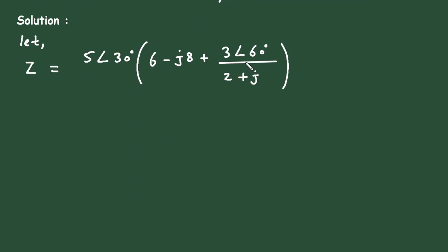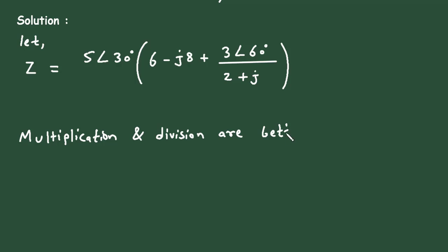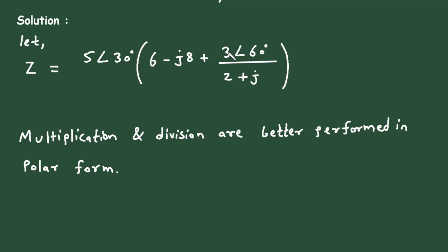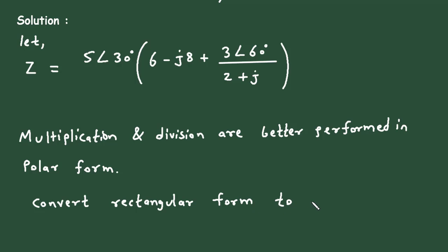First we will simplify the bracket. We have to perform division, and we know that multiplication and division are better performed in polar form. The numerator is already in polar form but the denominator is in rectangular form, so we will convert this rectangular form to polar form.